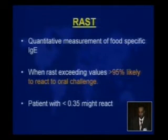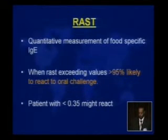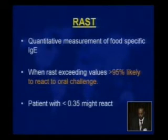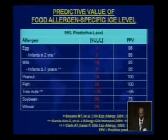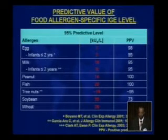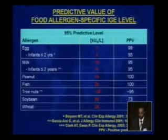RAST is a quantitative measurement of food-specific IgE. When RAST exceeds certain values, it makes a positive reaction to oral challenge more than 95 percent likely. A level less than 0.35 does not rule out a positive reaction. Specific threshold values: milk is 15 kU/L for over two years and 5 for under two years; egg is 7 and 2; peanut is 14; fish is 20.